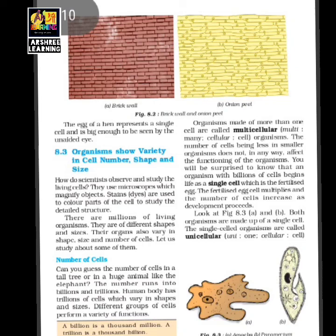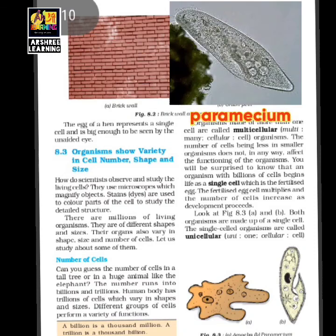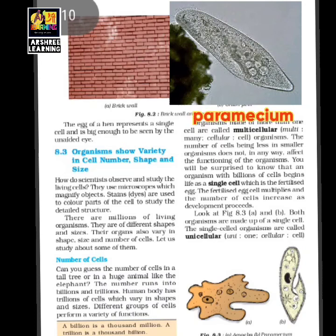Can you guess the number of cells in a tall tree? The number of cells present in a tree would be in the millions. The number of cells in a human body runs into billions and trillions. The human body has trillions of cells which are different in shape. They are all different because each cell is performing a different function.